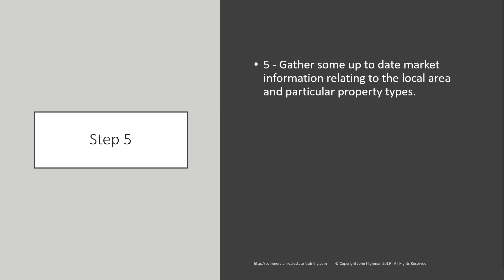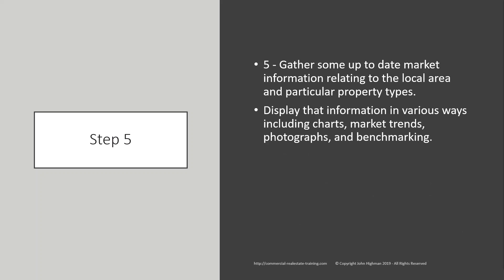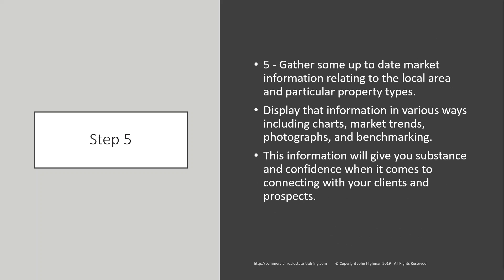Number five: gather up-to-date market information relating to the local area and the particular property types. Dig down into your property specialty. Display that information in various ways including charts, market trends, photographs, and benchmarking. You can load all of these things into the cloud so that you can download them onto your tablet or computer during any meeting or connection with a client or prospect. This information will give you substance and confidence when connecting with your clients. Do you have substance in your connections? Are you confident in doing so?